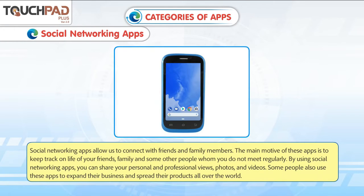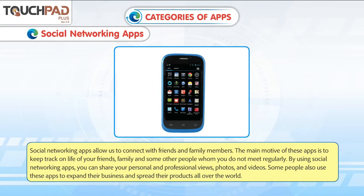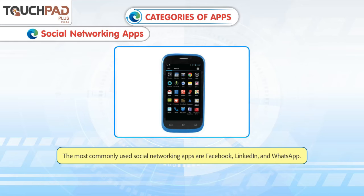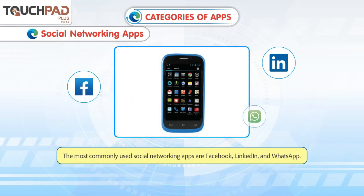Social Networking Apps allow us to connect with friends and family members. The main motive of these apps is to keep track of the lives of your friends, family and other people whom you do not meet regularly. By using social networking apps, you can share your personal and professional views, photos and videos. Some people also use these apps to expand their business and spread their products all over the world. The most commonly used social networking apps are Facebook, LinkedIn and WhatsApp.